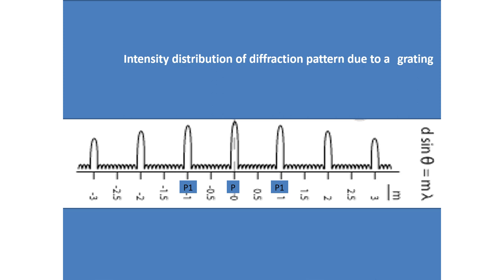This is the intensity distribution of the diffraction pattern due to a grating. At the center of the screen, you get the zeroth order principal maxima or central maxima. These are the first order and second order principal maxima on either side. In between two principal maxima, you will get numerous secondary maxima and minima — specifically, S minus 2 secondary maxima and S minus 1 secondary minima, where S is the number of slits.